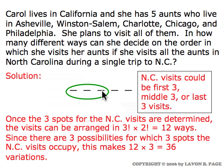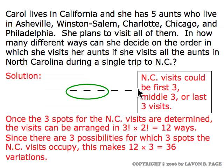If she's going to do North Carolina first, then the first three stops will be in North Carolina and Chicago and Philadelphia will be the final two. She would be arranging the three North Carolina cities in the first three spots — that can be done in three factorial ways. And she would be arranging Chicago and Philadelphia in the last two spots — that can be done in two factorial ways. Three factorial times two factorial is twelve, so there would be twelve different ways if she did the North Carolina cities first. That's not the final answer, but we're getting there.